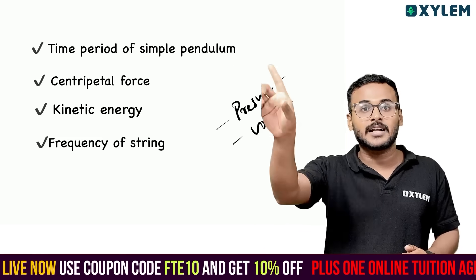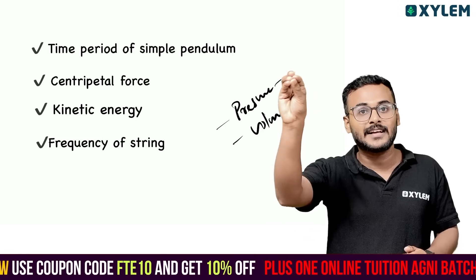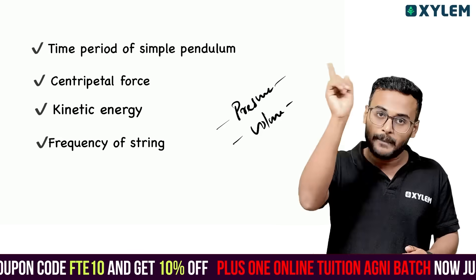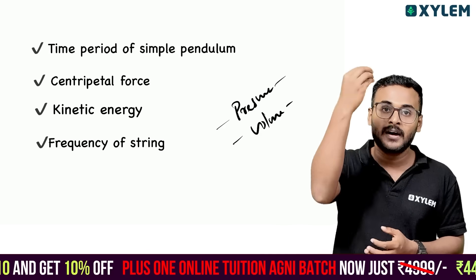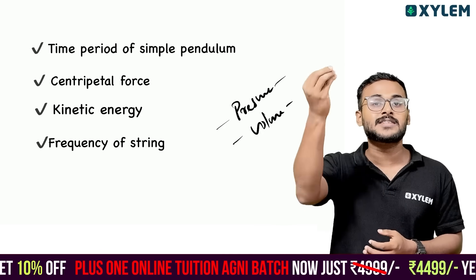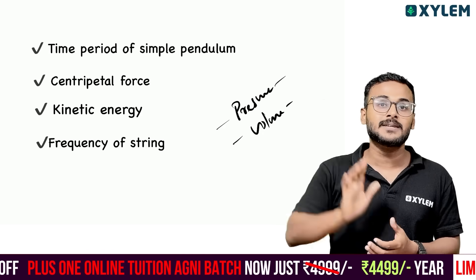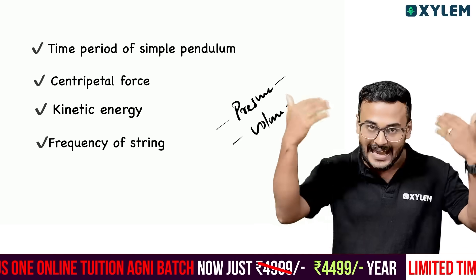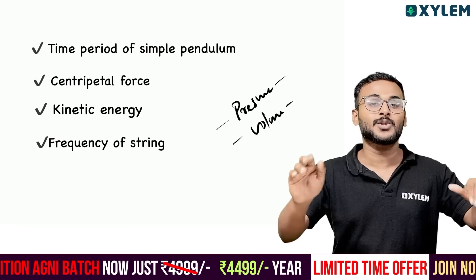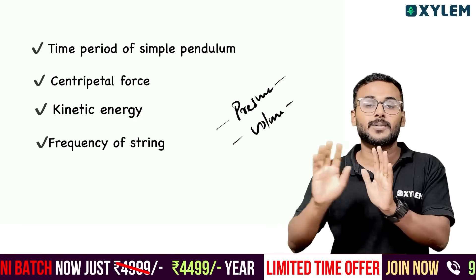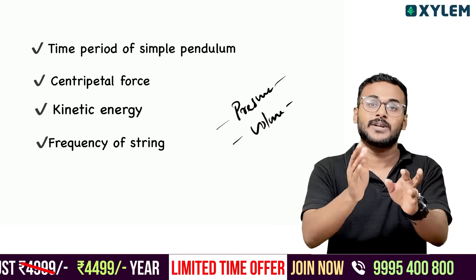The main equation: the proportionality is set equal to a constant, introducing powers A, B, C. Then dimension equating — equate dimensions, find A, B, C — and substitute back into the main equation.